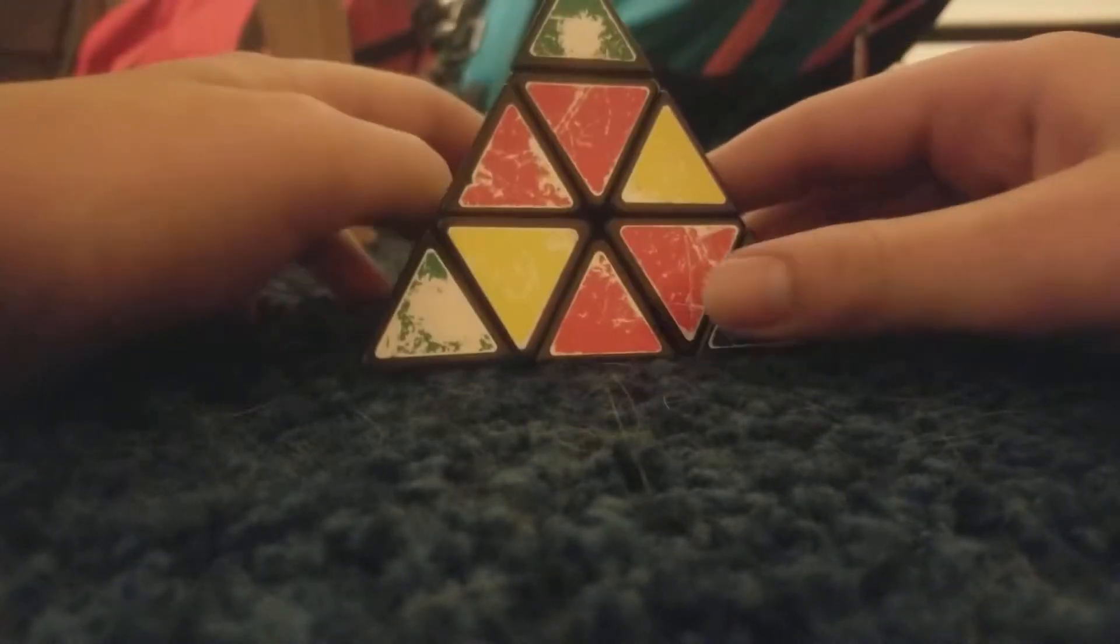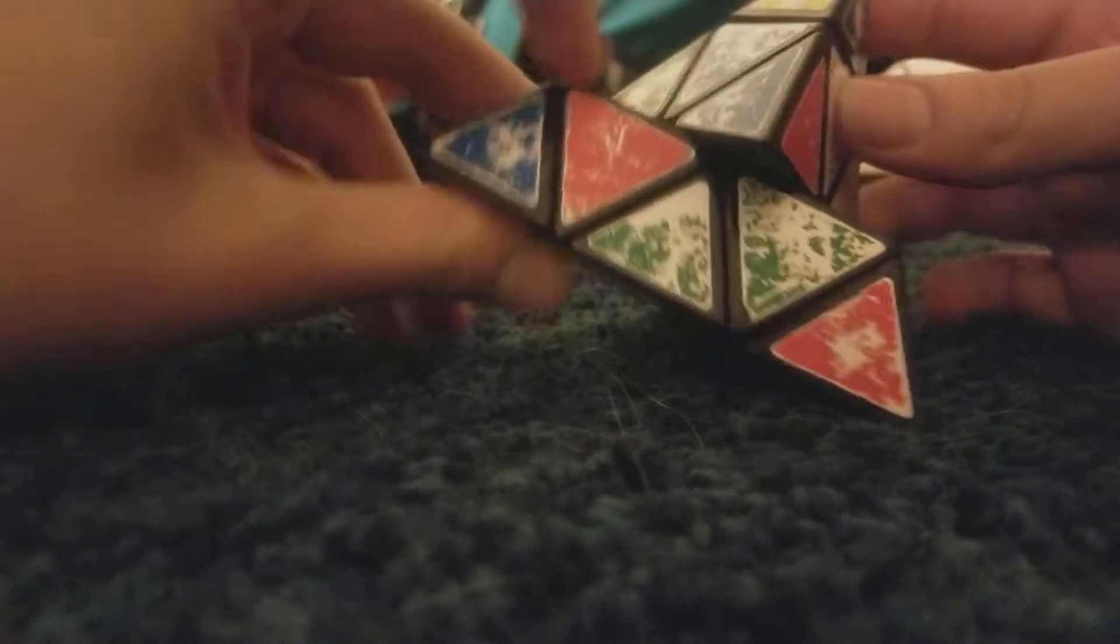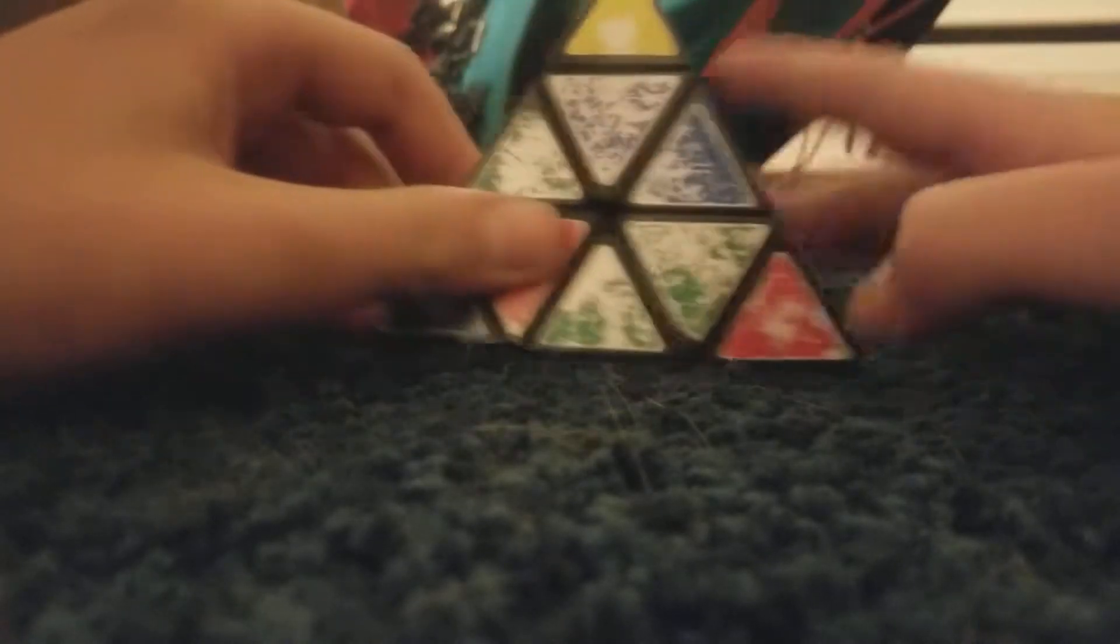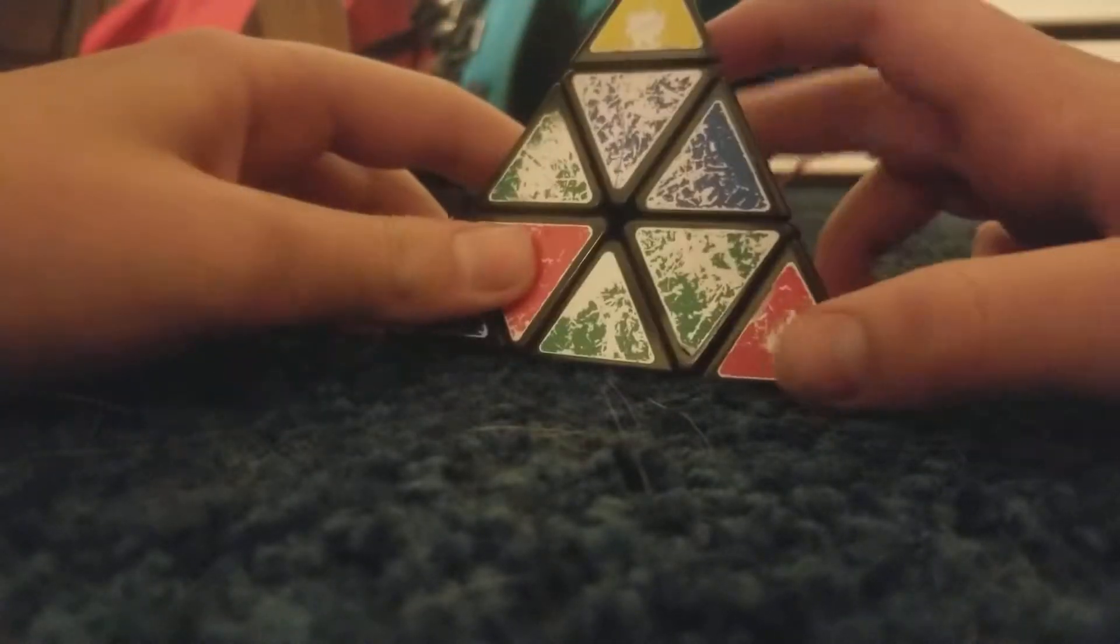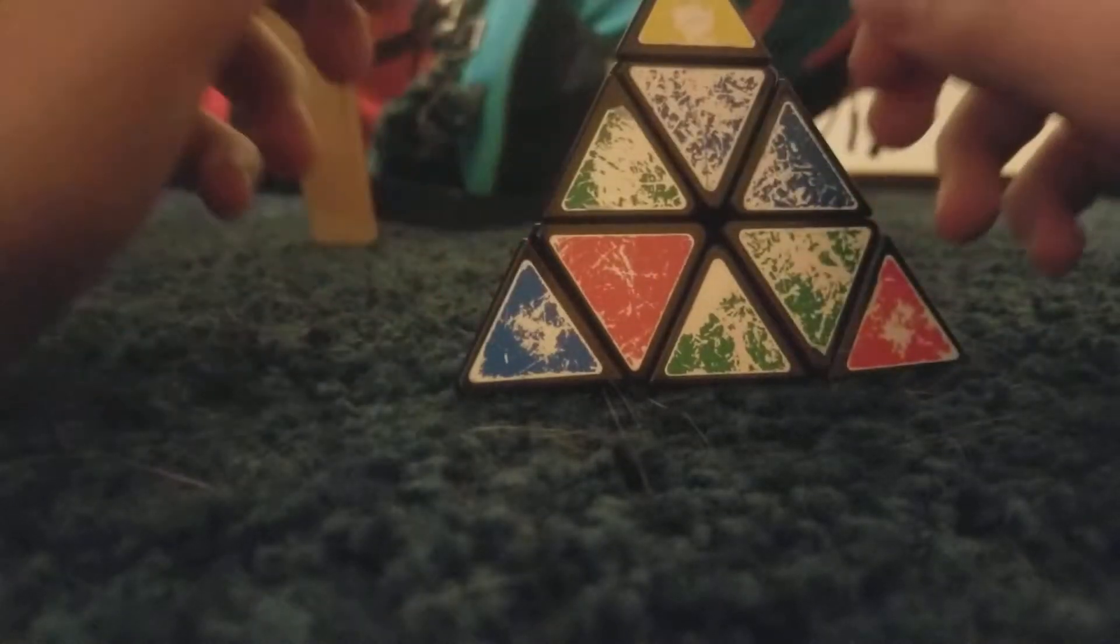Okay, so here is a scrambled Pyraminx. There's four total colors: blue, green, yellow, and red, and we're going to match them. Of course, we're going to solve it.